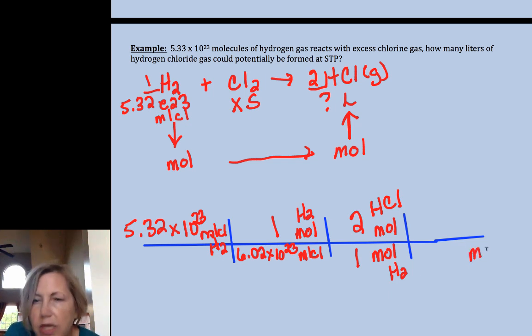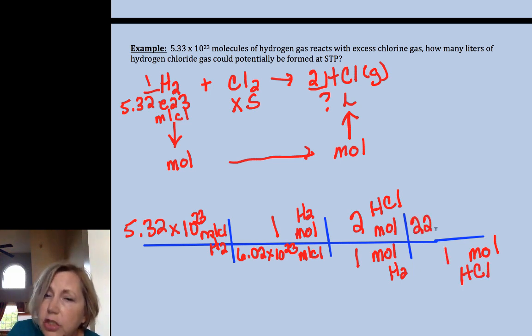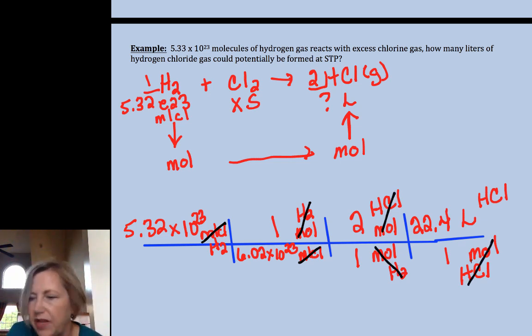Now, because it's a gas and because it's standard temperature and pressure, one mole of HCl will occupy 22.4 liters of HCl. Again, you want to make sure your units cancel. Molecules cancel, moles of hydrogen cancel with moles of hydrogen, moles of HCl cancel moles of HCl. And double check my algebra, that's a good way to know you understand the video. I have 39.7 liters of HCl.